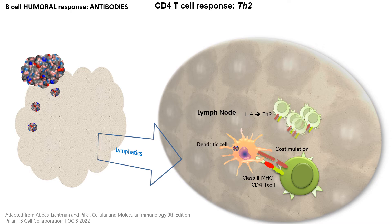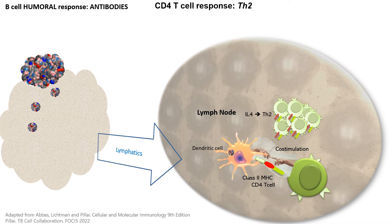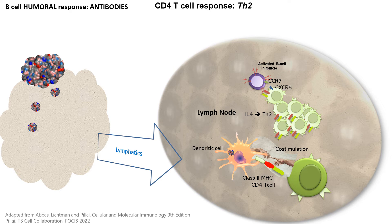Interleukin-4 makes the Th2 cells — which now have the T-cell receptor for that antigen — proliferate in the lymph node. Once these Th2 cells have proliferated and are active, they express on their surface CXCR5, a migration molecule that takes them closer to the B-cell area from the T-cell area. T-cells are normally in the center, in the medulla, and B-cells are in the periphery.